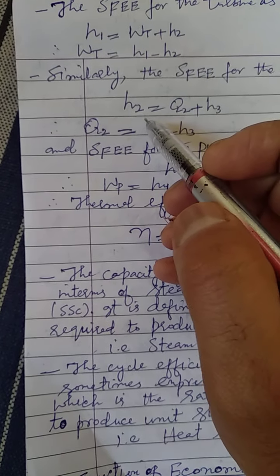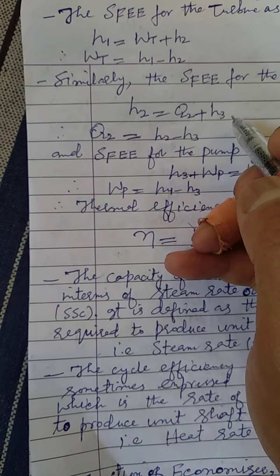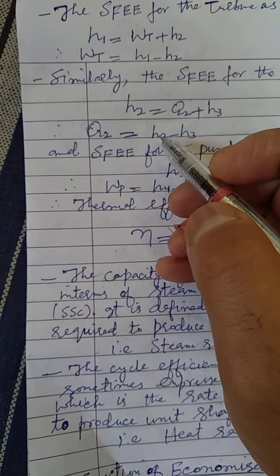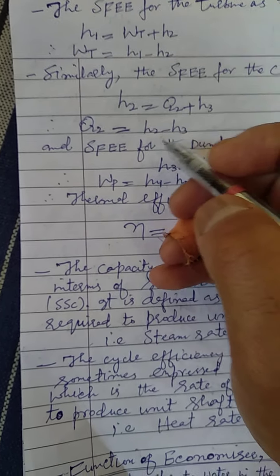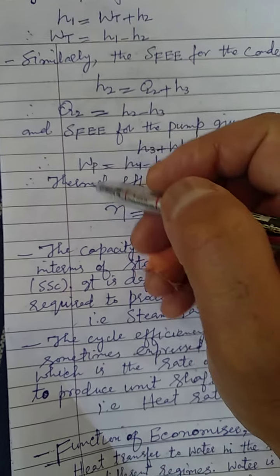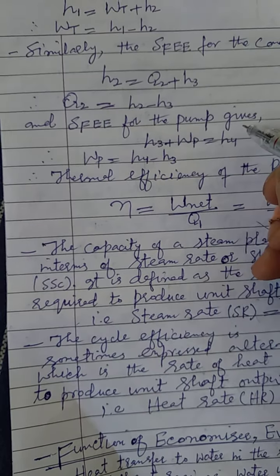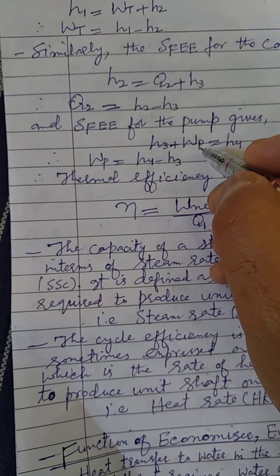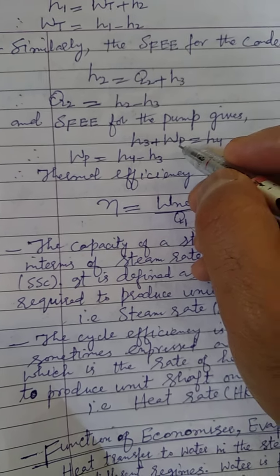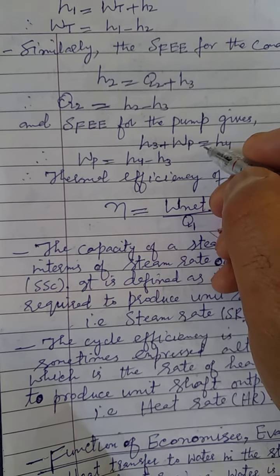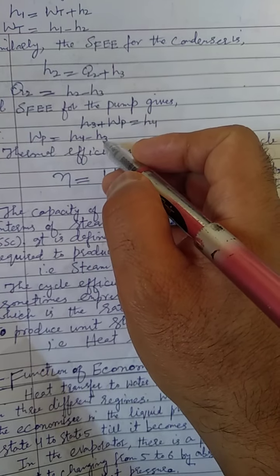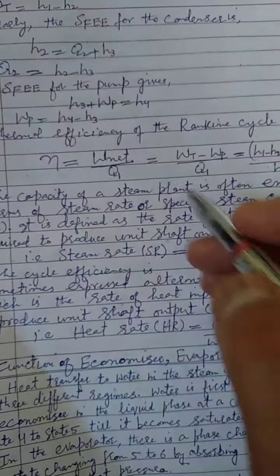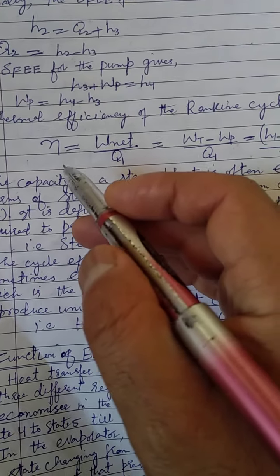The steady flow energy equation for the condenser gives H2 equals Q2 plus H3, where Q2 is the heat rejected to the atmosphere. For the pump, the steady flow energy equation gives H3 plus WP equals H4, so pump work WP equals H4 minus H3.